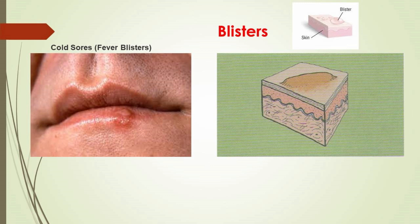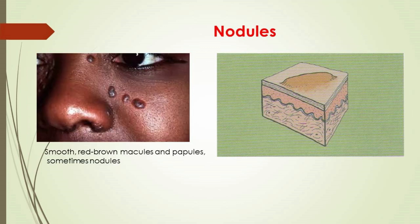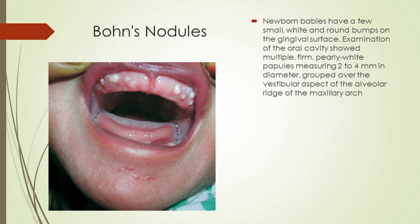Nodules are present deep in the dermis and the epidermis can be easily moved over them. This is a solid raised skin lesion; most nodules are more than 2 cm in diameter. For example, newborn babies may have a few small white and round bumps — called Bohn's nodules — on the gingival surface.